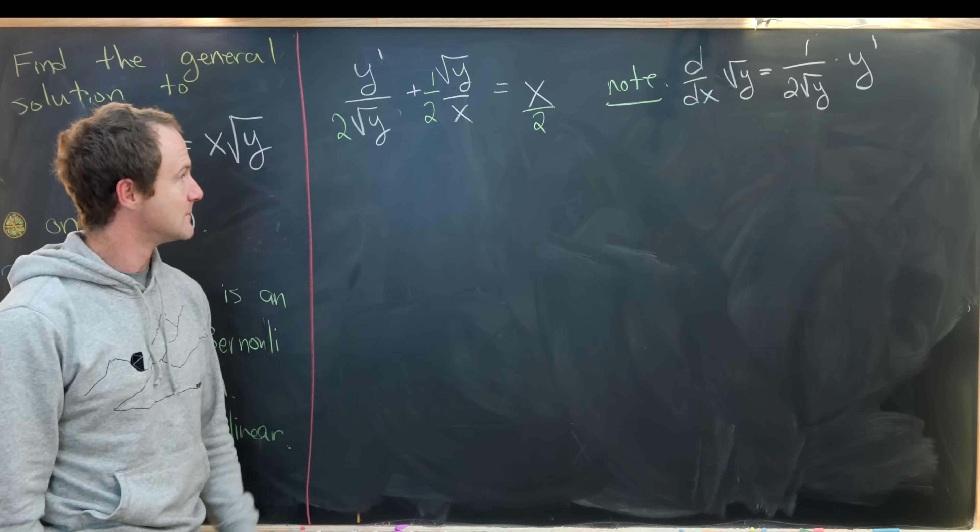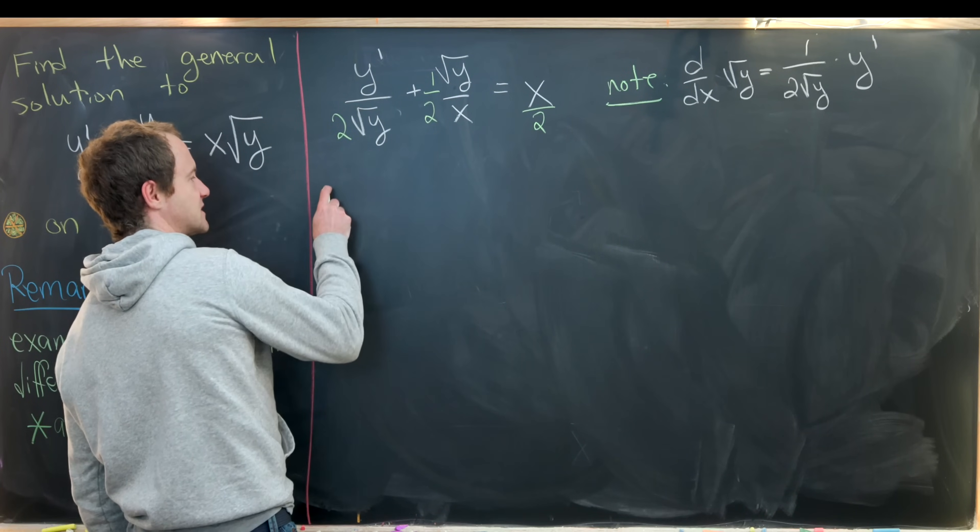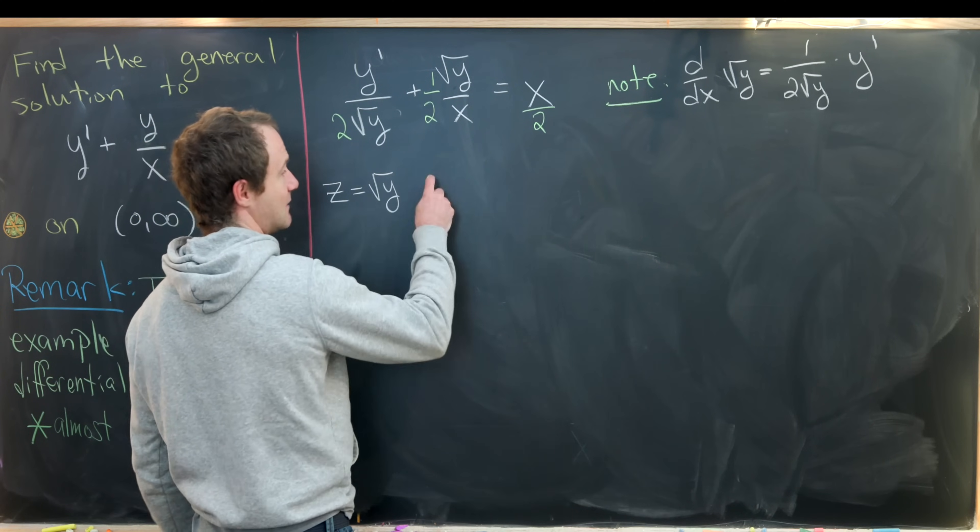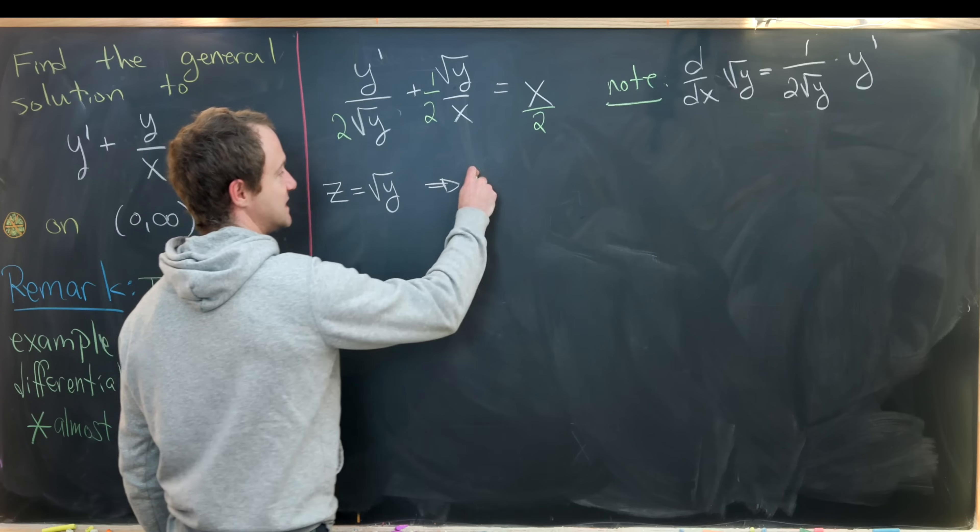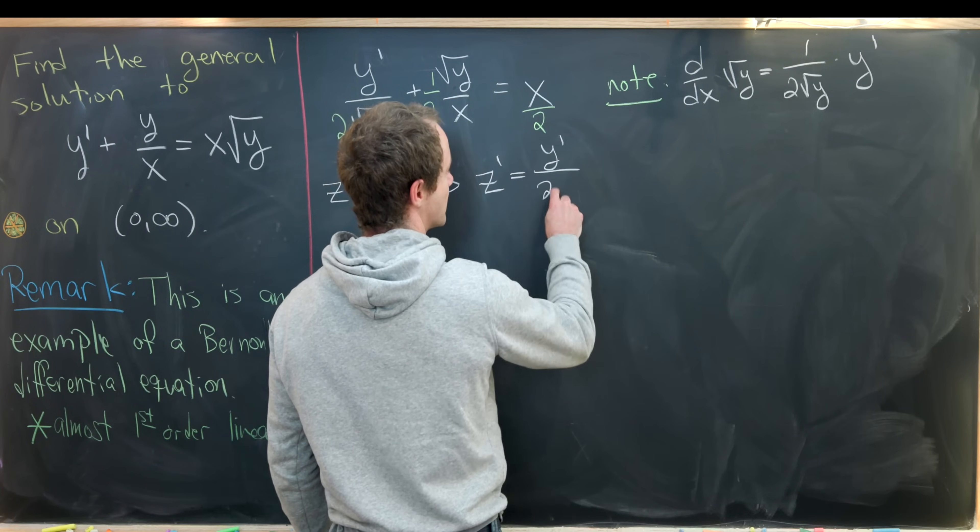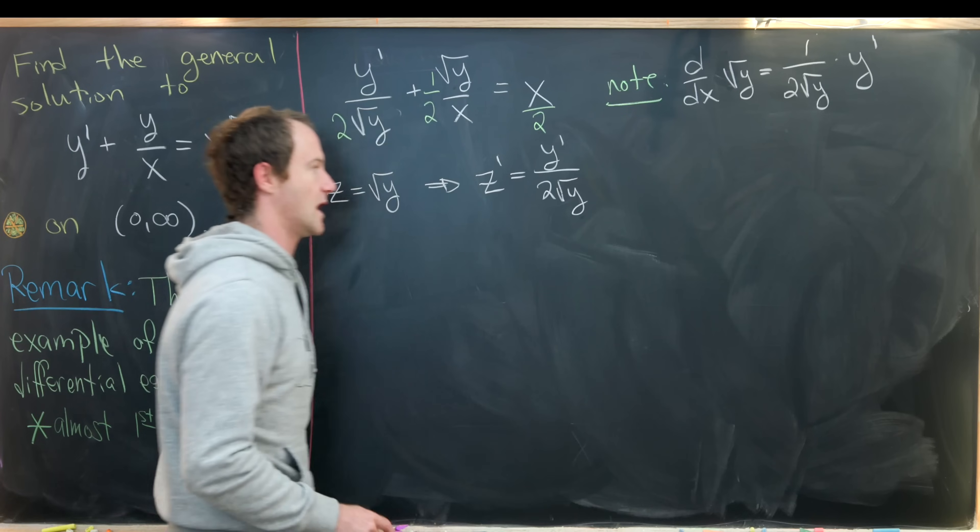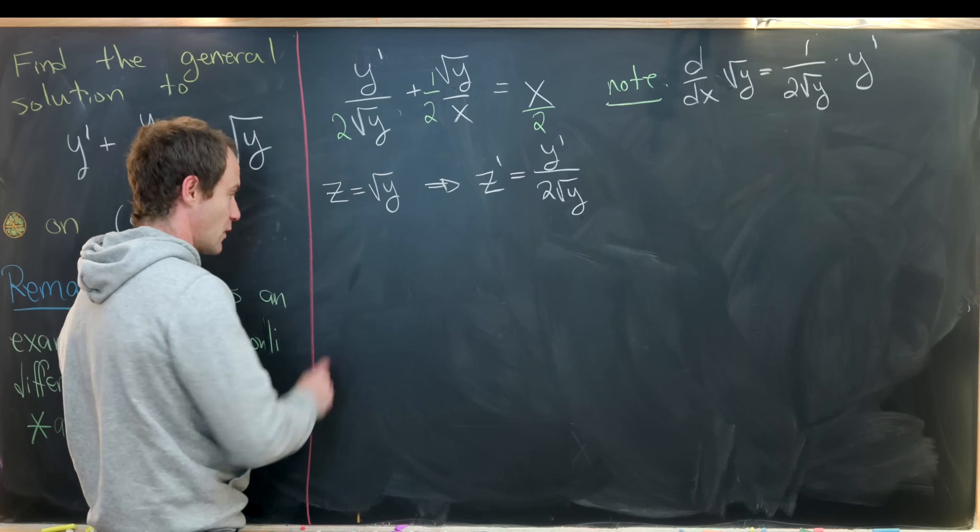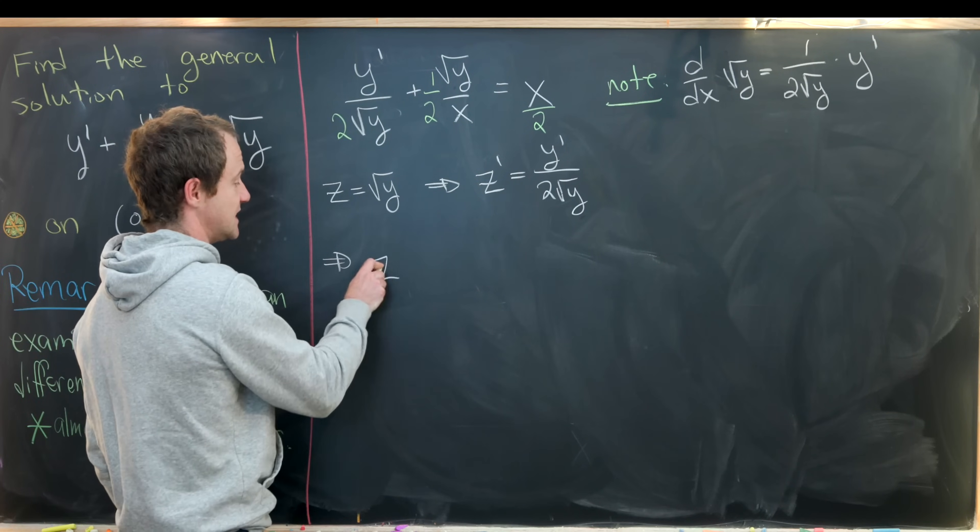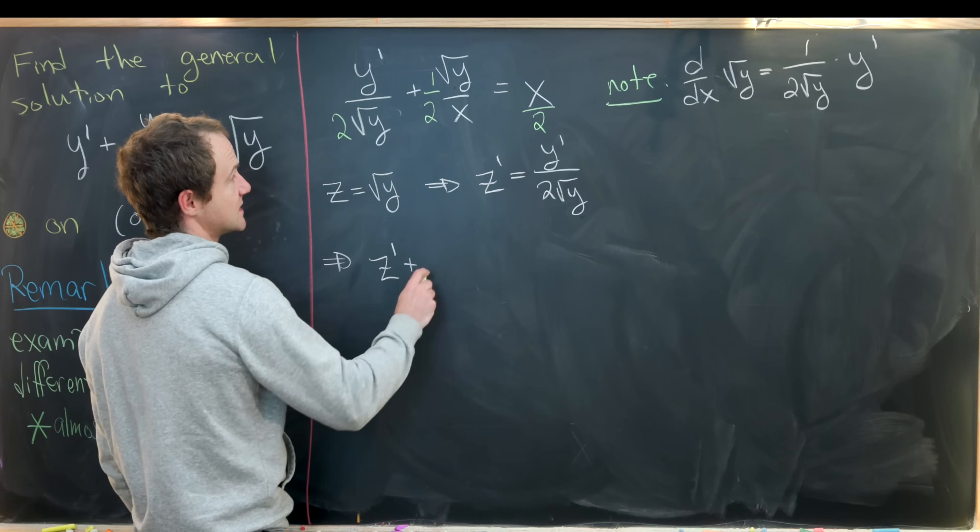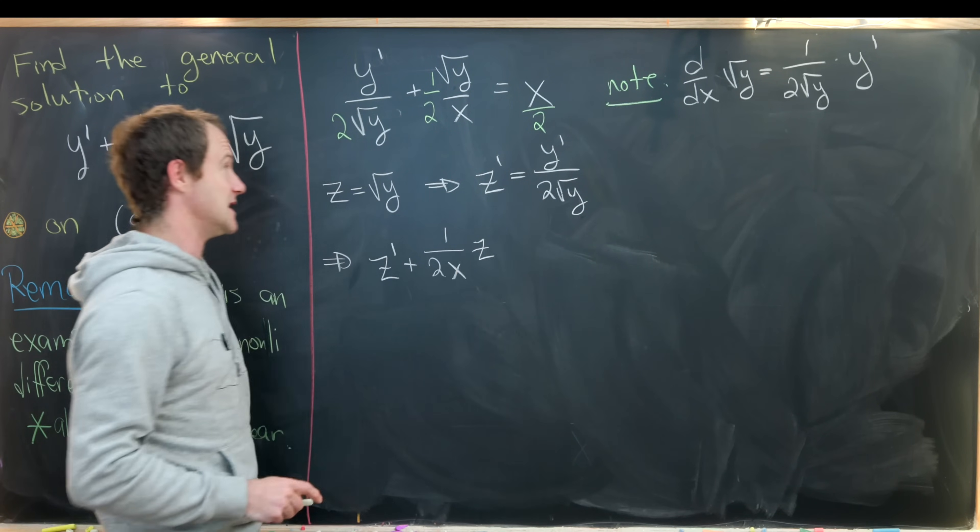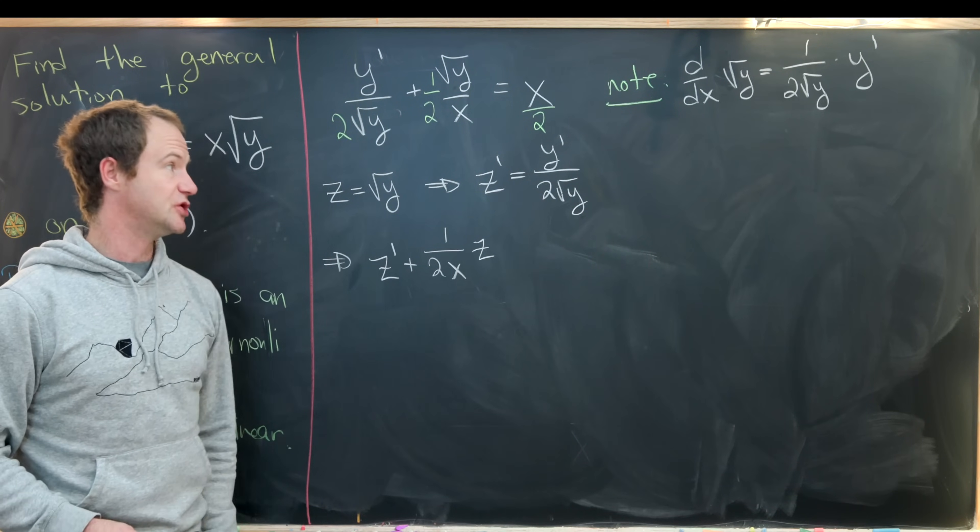Let's maybe make our substitution. Let's say that z is equal to the square root of y. By our observation up there, we see that z prime is equal to y prime over two times the square root of y. That means our differential equation can take the following form: all of this is equal to z prime plus one over two x times z.